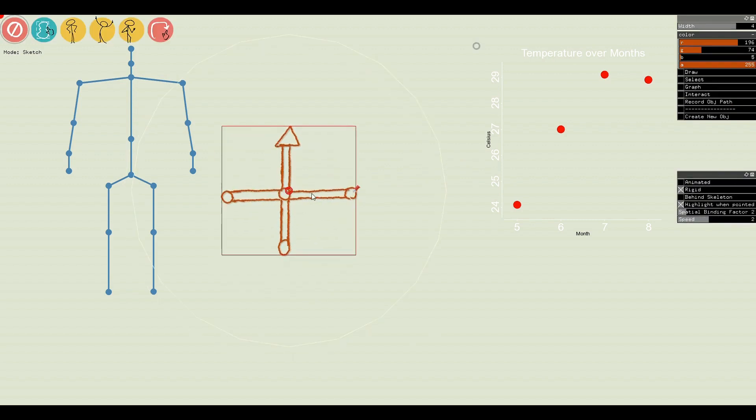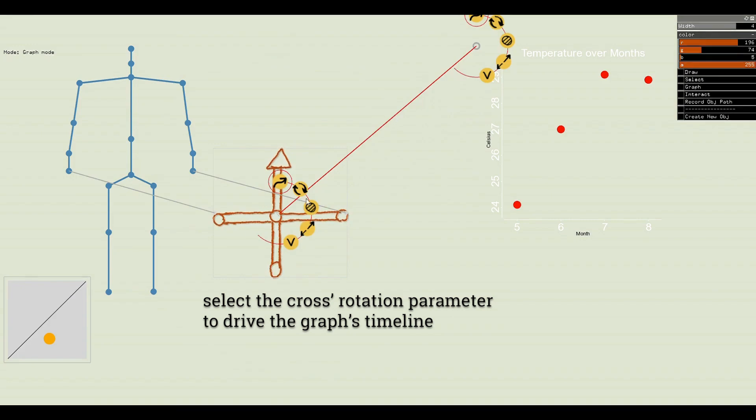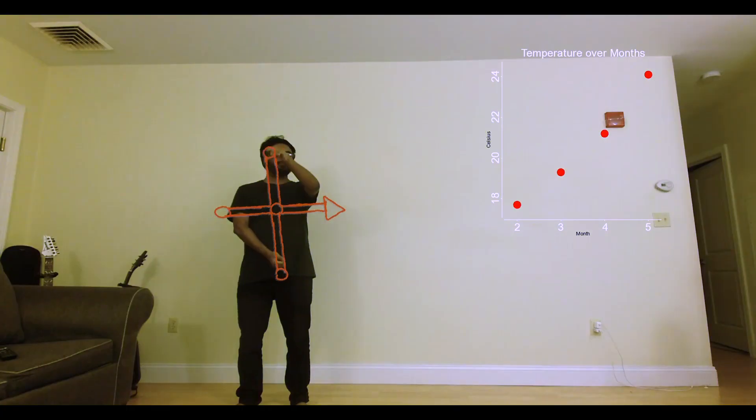The user creates two control points and attaches the hand joints with them. An edge specifies that the rotation parameter of the cross will drive the timeline of the chart.